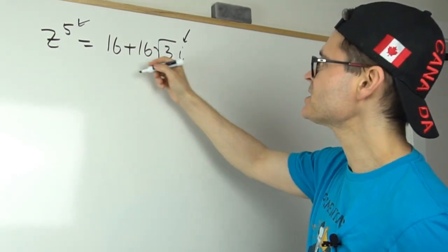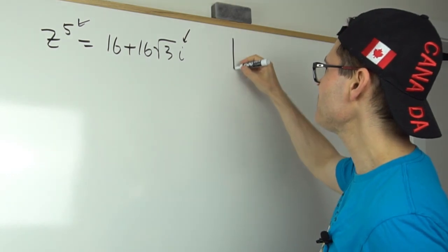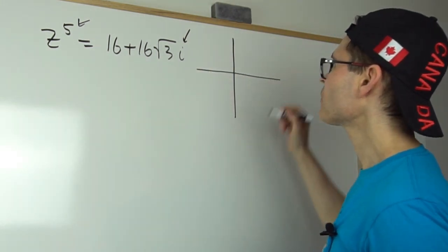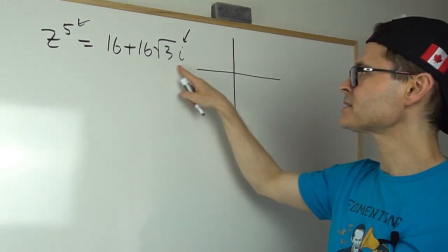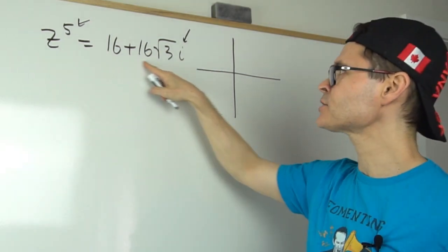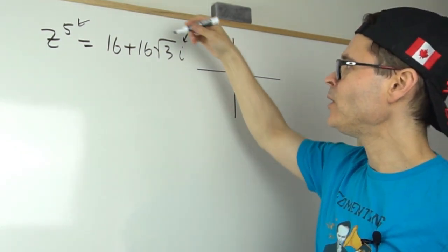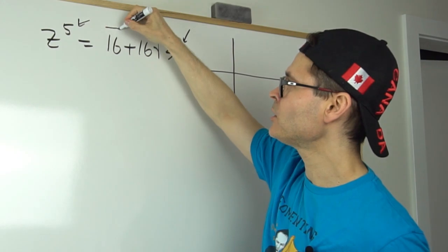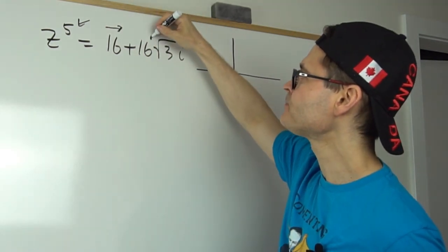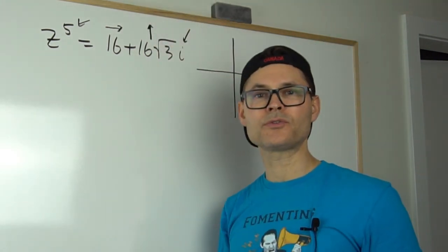What I'm going to do is I'm going to get a handle on the picture of this particular complex number. So on the right hand side, this is actually a complex number. And what it says is from the origin, I'm going to walk 16 units to the right and 16√3 units up.